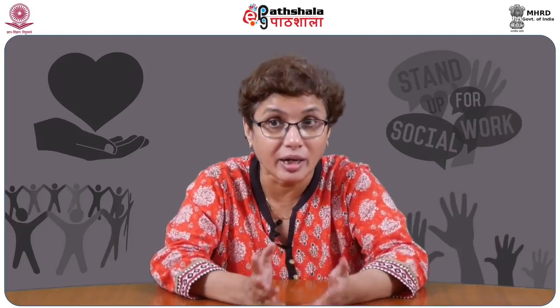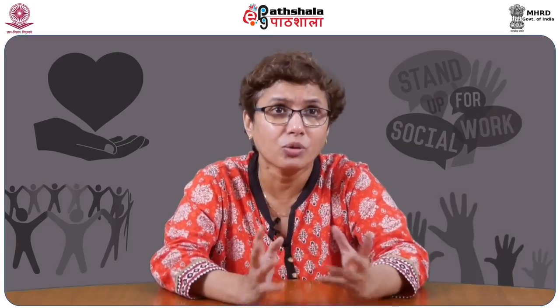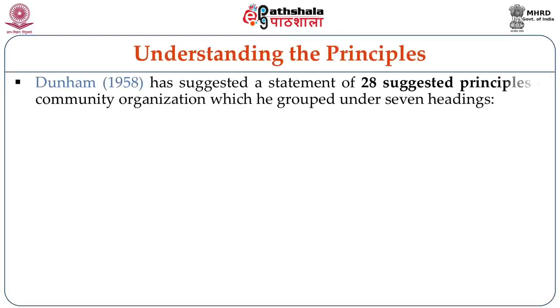In the earlier lesson we were looking at Murray Ross's value framework. This time we will be looking at Arthur Dunham, who has written a lot on community organization — a good guiding book we can refer to in community practice. He wrote in 1958 about 28 suggested principles of community organization. These 28 suggested principles can be grouped under 7 headings. Let us look at these 7 headings.